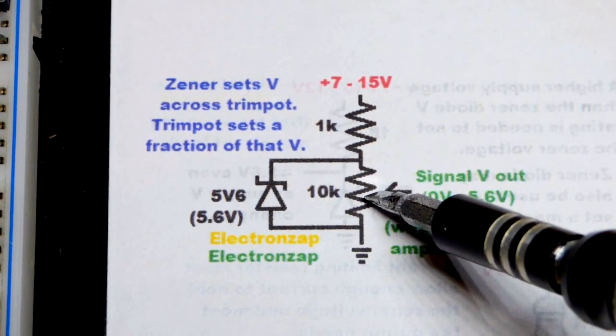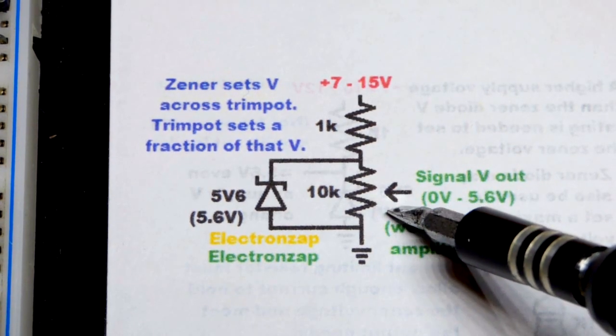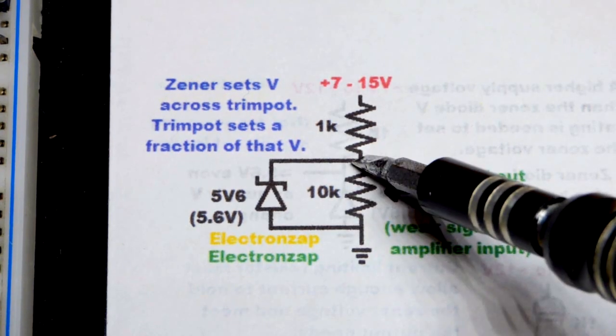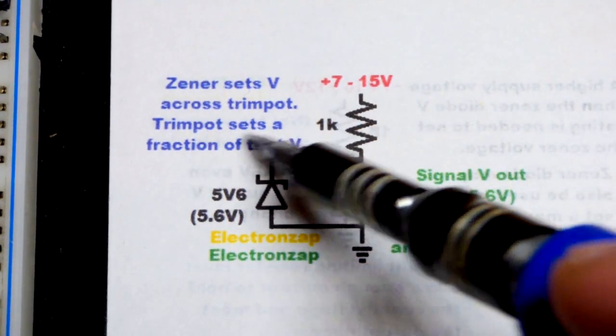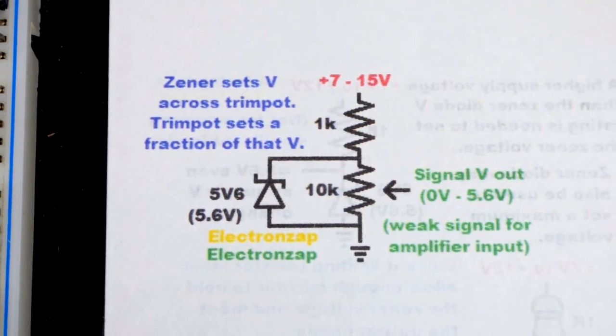So we're going to take a trim pot here, a potentiometer, a small one that fits on breadboards really easily, and you put that voltage across the two ends of the fixed element there, you have a voltage divider. And so the trim pot sets a fraction of that voltage, in this case 5.6 volts.